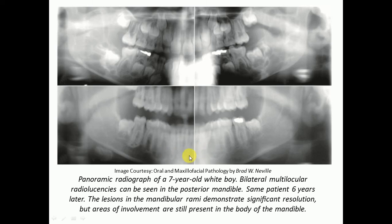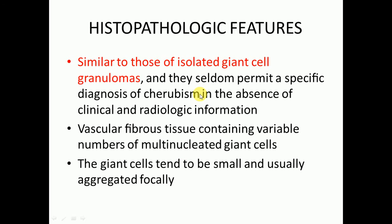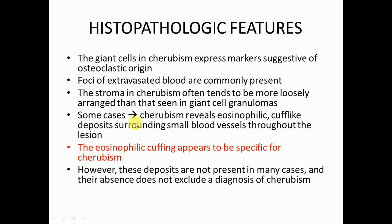The pathological features are similar to those of isolated giant cell granulomas and seldom permit a specific diagnosis of cherubism without clinical and radiographic information. Histologically there is vascular fibrous tissue containing variable numbers of multinucleated giant cells. The giant cells tend to be small and usually aggregated focally, and they express markers suggestive of osteoclastic origin. Foci of extravasated blood are commonly present. The stroma in cherubism often tends to be more loosely arranged than that seen in giant cell granuloma.